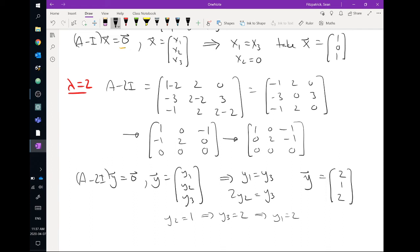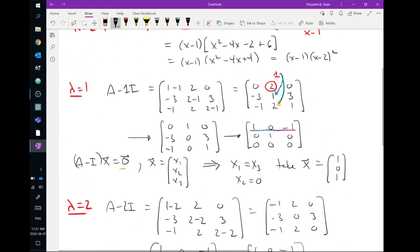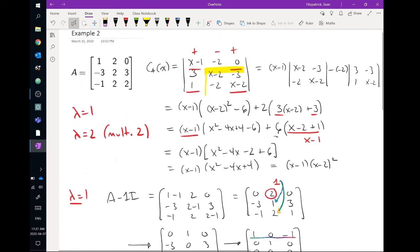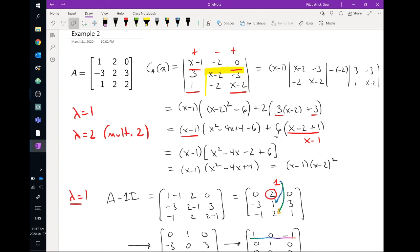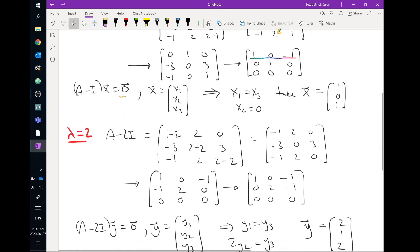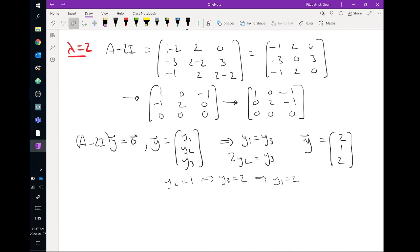And if we wanted to, we could always go back to the original matrix. Where is it? Way up here. And we could check that if we multiply by 2, 1, 2, make sure that we actually get what we're supposed to, which is twice the original eigenvector. You know, if you want to make sure you didn't do any mistakes. Let's give it a try. If I do A times y. So that's 1, 2, 0, minus 3, 2, 3, minus 1, 2, 2. I multiply by 2, 1, 2. Okay.